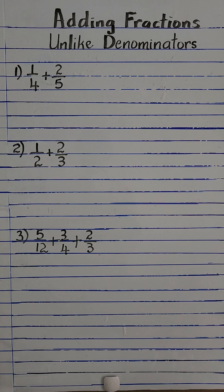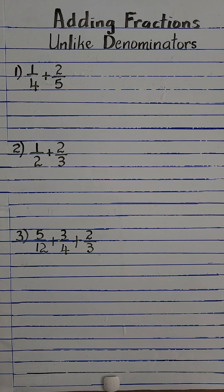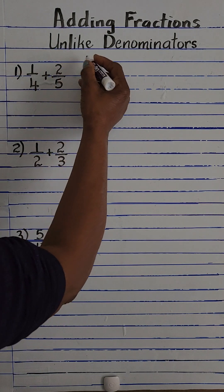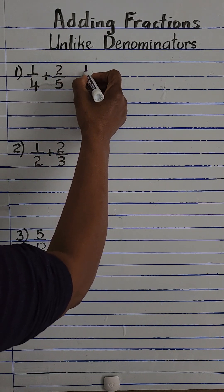Welcome to adding fractions with unlike denominators — fifth grade math standards of learning. When we're adding fractions with unlike denominators, we first have to find a common denominator. We're going to use a listing method where we list the multiples of the denominators.